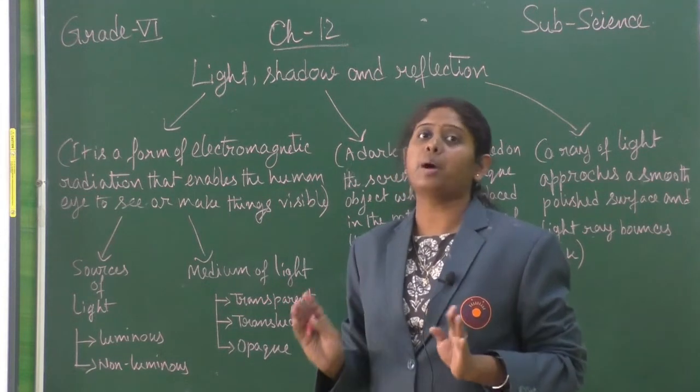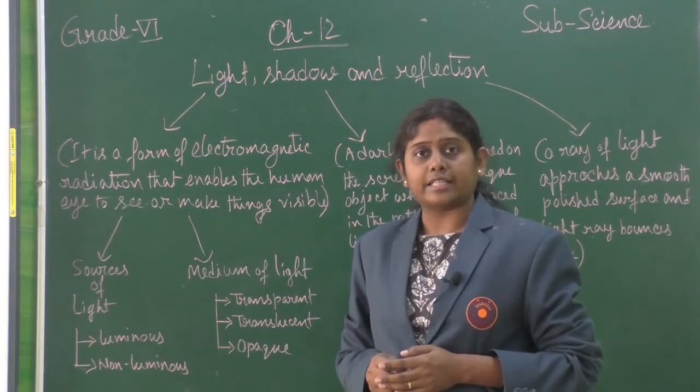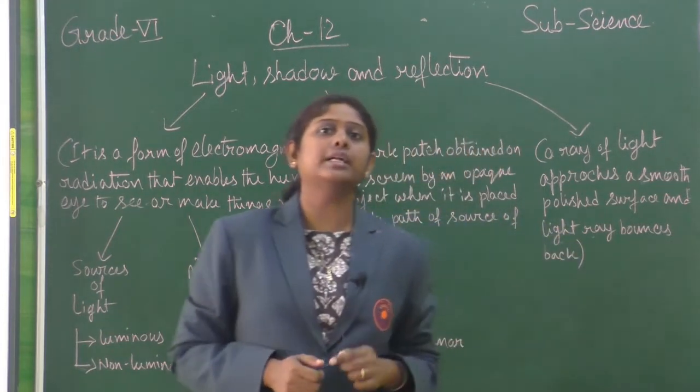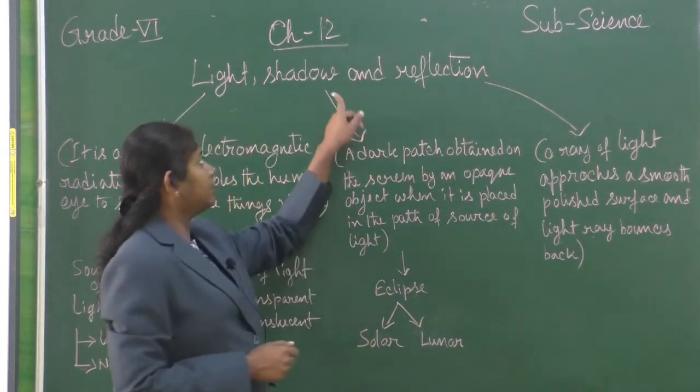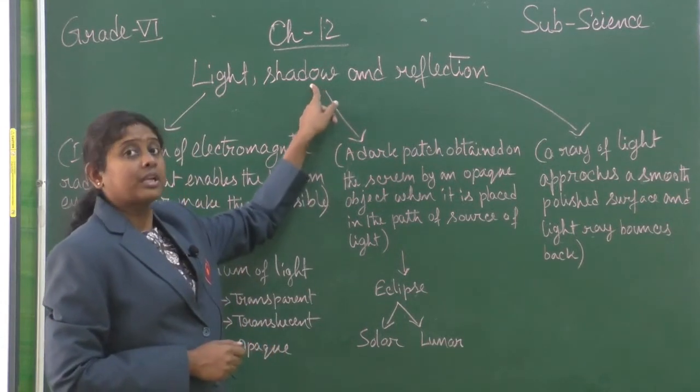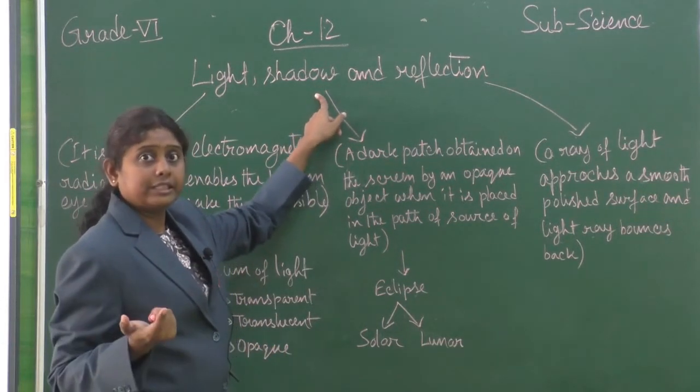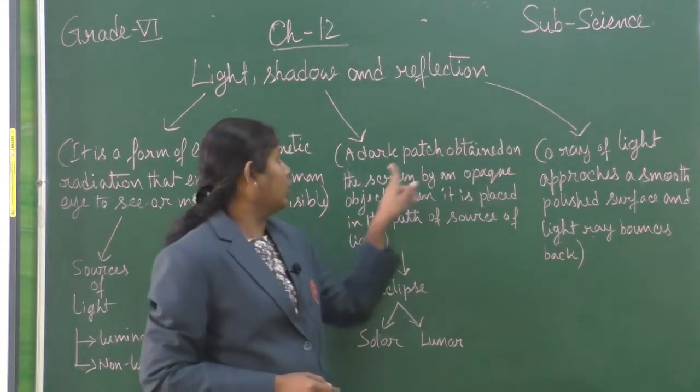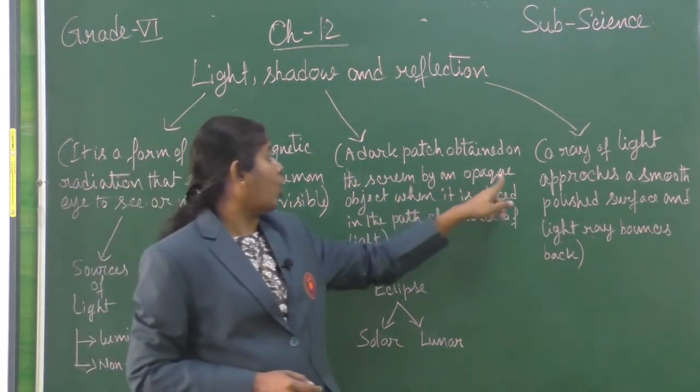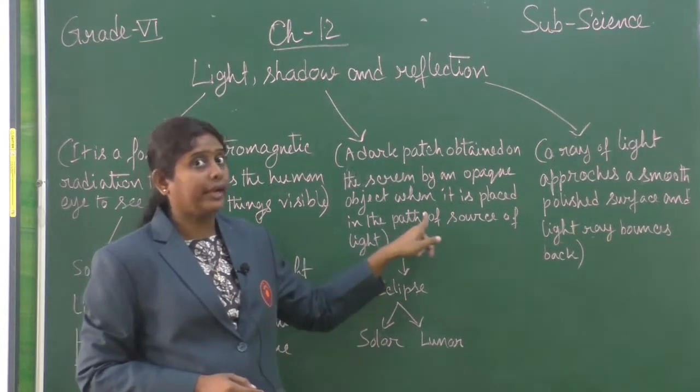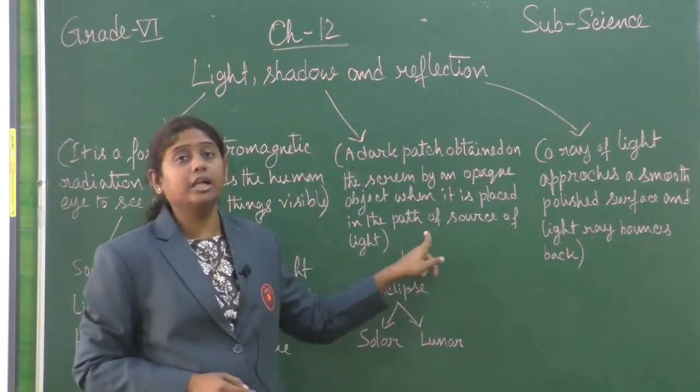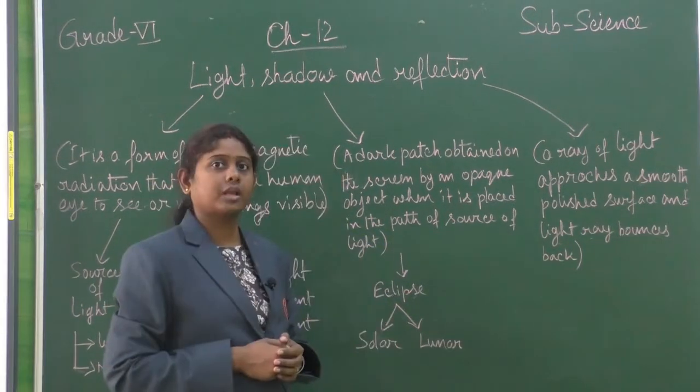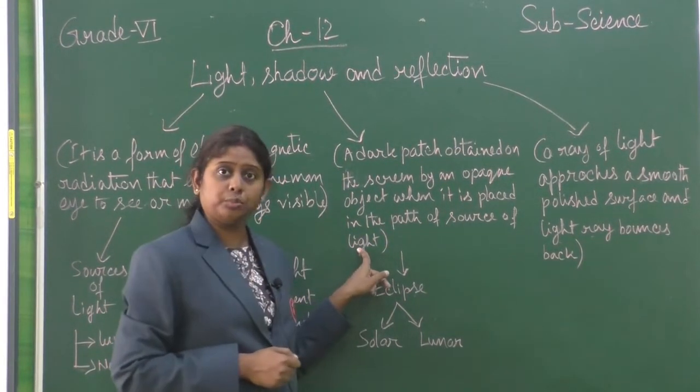Now come to the next topic of this chapter, that is shadow. What do you mean by shadow? A dark patch obtained on the screen by an opaque object when it is placed in the path of a source of light, that's called shadow.